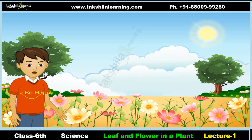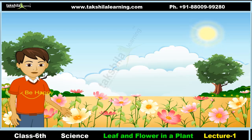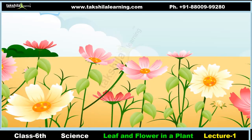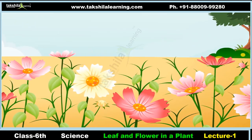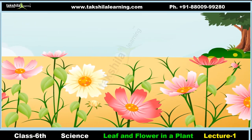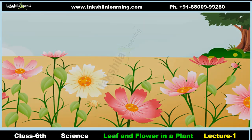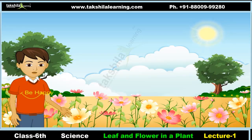The part of a plant that attracts us to it is flowers. Flowers in full bloom make us cheerful; they make our lives colorful. Just as there is a variety of flowers, there is a wide array of leaves. It is a sheer delight to watch leaves and flowers of different shapes and sizes.